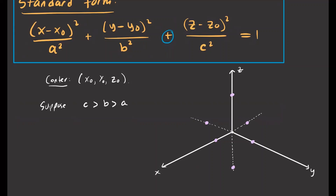In the x-y plane — that's the floor — connecting these intercept points gives us an ellipse. In the y-z plane, connecting those points gives another ellipse. And in the x-z plane, connecting the x and z coordinates gives a third ellipse. That's what we call an ellipsoid.